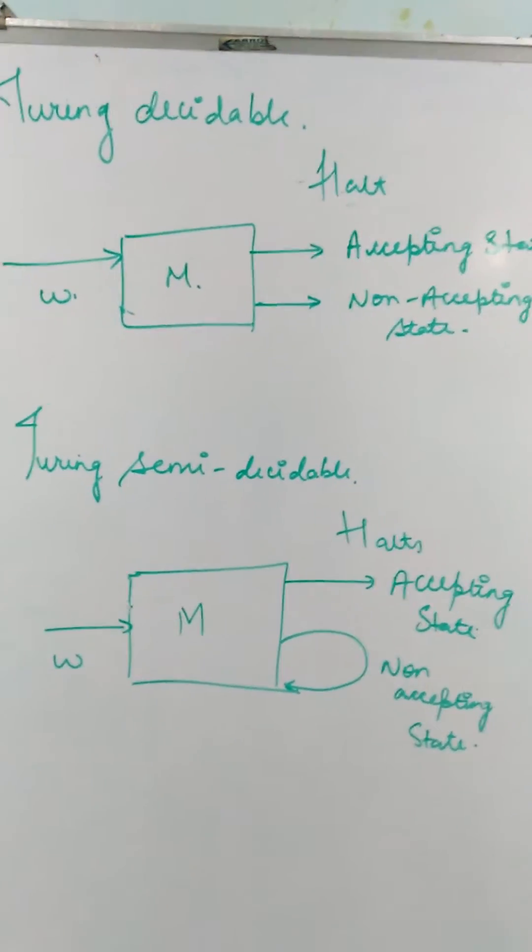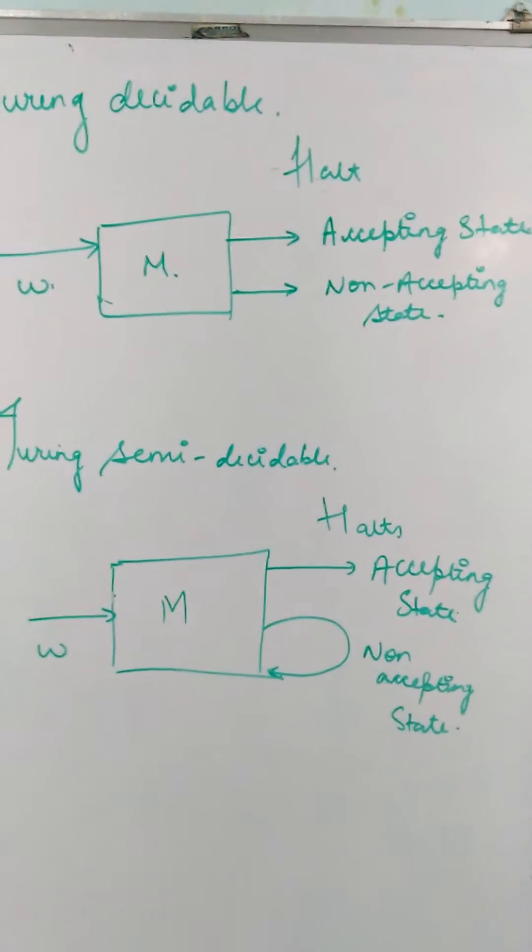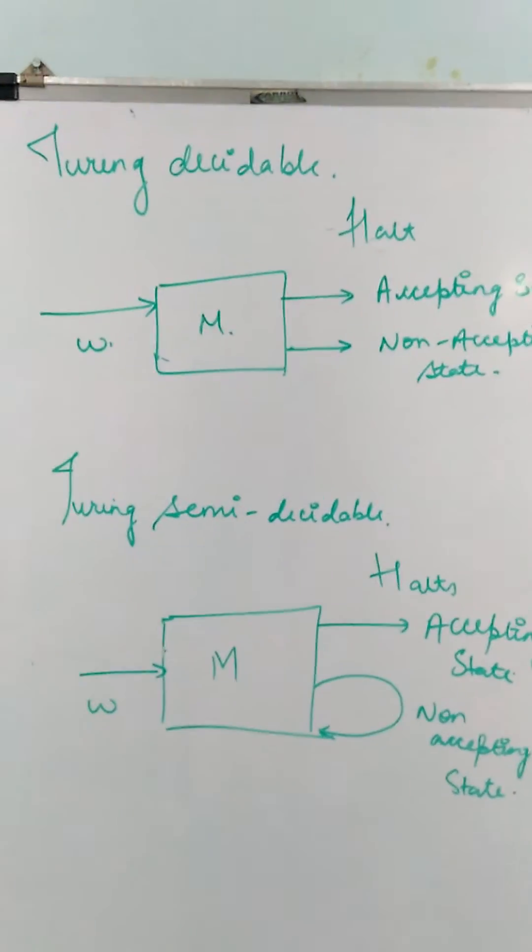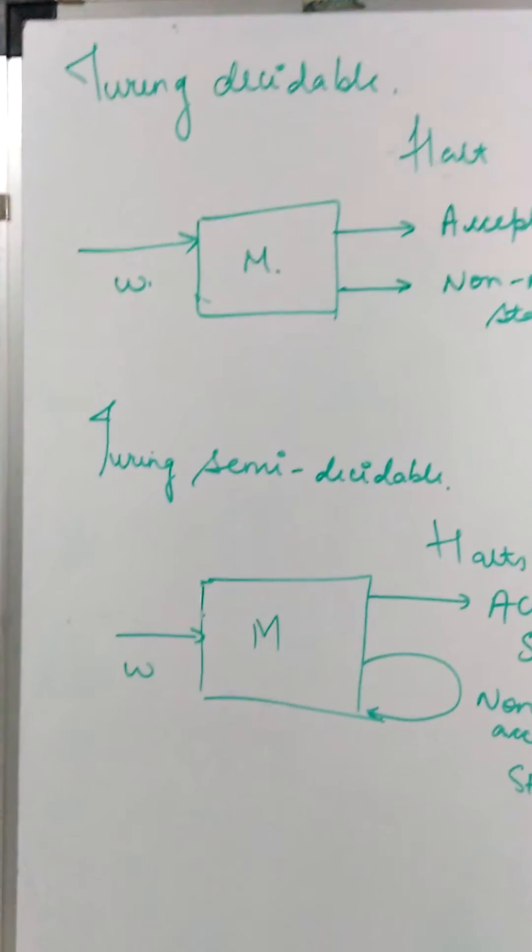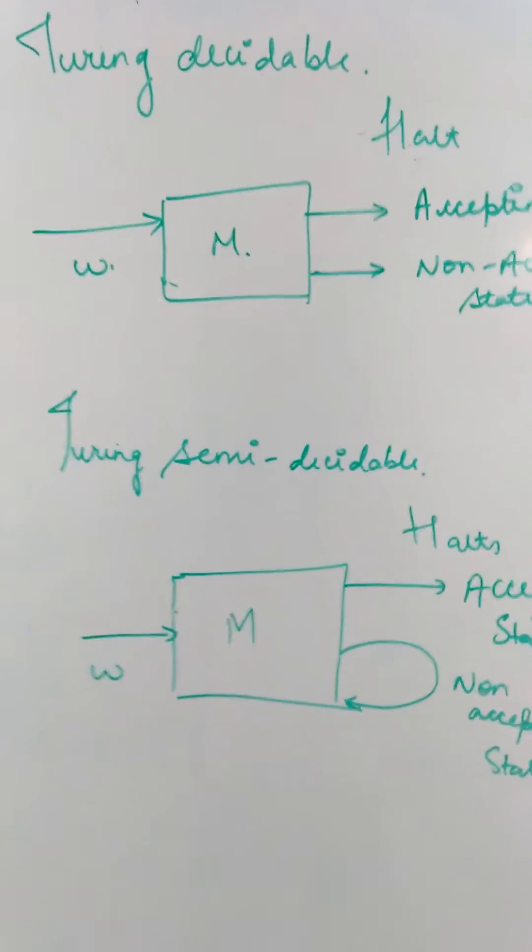It will either halt in an accepting state or it will halt in a non-accepting state. So those languages are called Turing Decidable because the Turing machine always halts at a state.